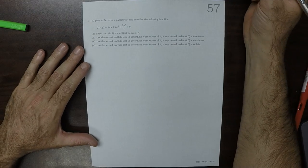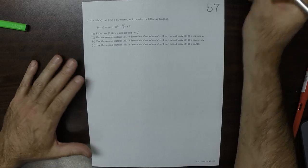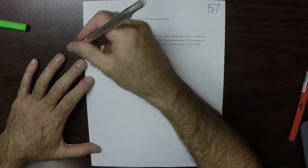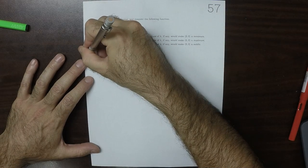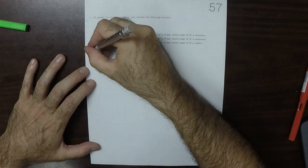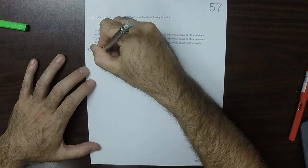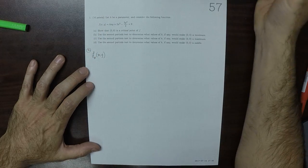This is the solution to Written Homework 57. So for part A, let's compute the partials of f, assuming k is a constant.